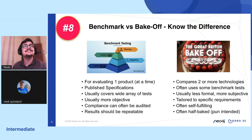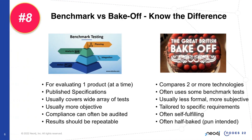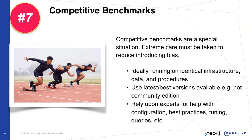When you see a competitive benchmark, these are a special situation and you have to take extreme care when looking at them, because you can really introduce bias. Ideally you're running these on identical infrastructure with similar data and procedures. The biggest thing is to make sure you're using the best and latest versions available — don't use a community edition for testing. This is a common mistake. To use a sports analogy, using the community edition is like using the junior varsity team — it's just not designed for that type of comparison.